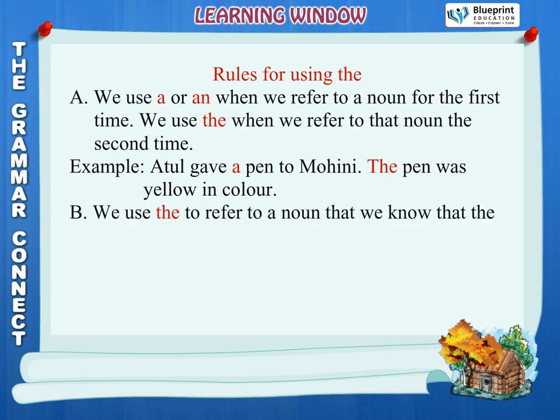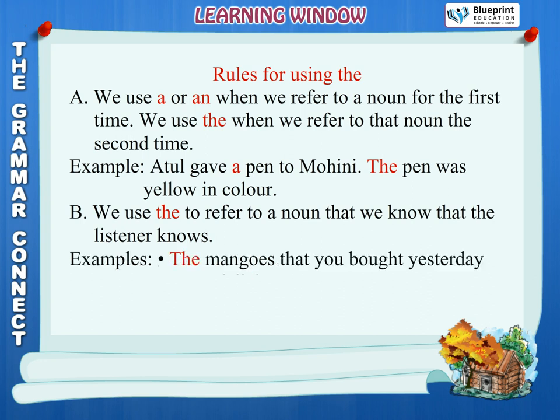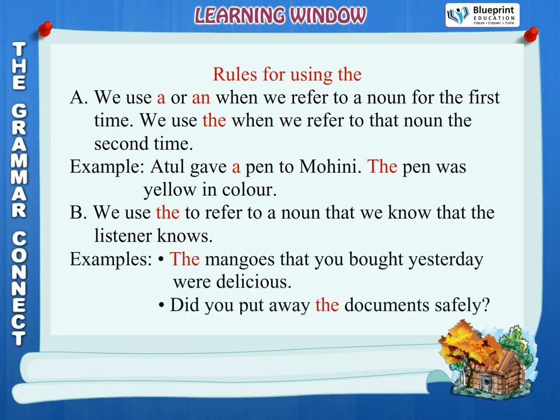Rule B: We use the to refer to a noun that we know the listener knows. Examples: The mangoes that you bought yesterday were delicious. Did you put away the documents safely?